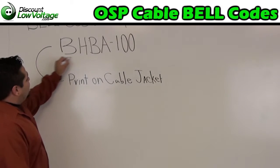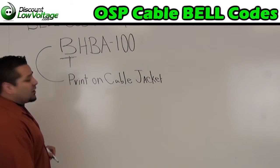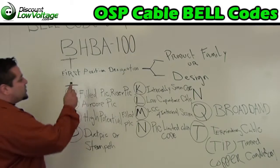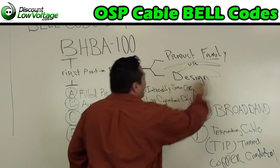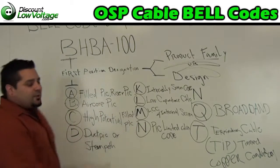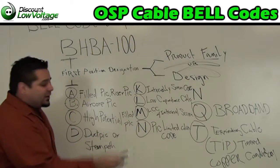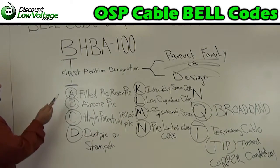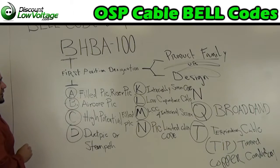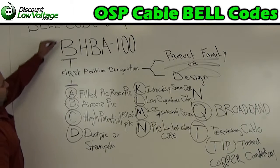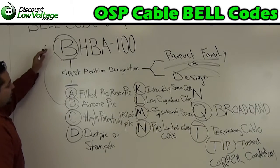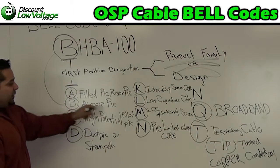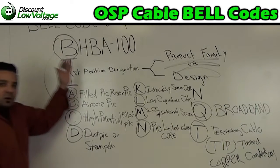Let's figure out what the first position means. The first position designation stands for either the product family or design of your cable. You have A, which is a filled PIC riser PIC cable. B, an air core PIC. Our first letter here is a B, so this is telling us we have an air core PIC to start off our part number.